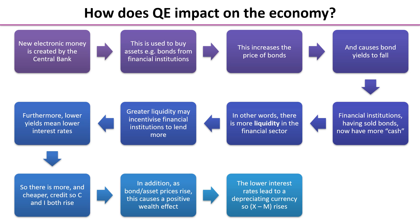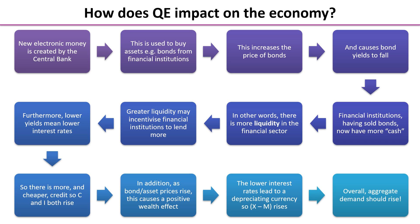The lower interest rates lead to a depreciating currency, again from the previous lesson. So we have the hot money flowing out of the economy looking elsewhere for a higher interest rate, and that leads to a depreciation. So our section of the aggregate demand, X minus M, rises. Overall, aggregate demand should rise.